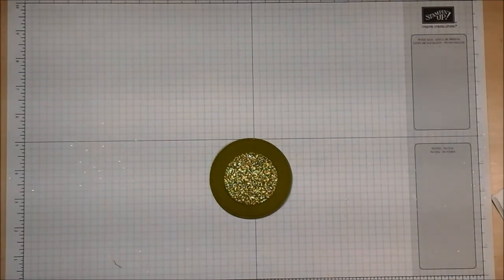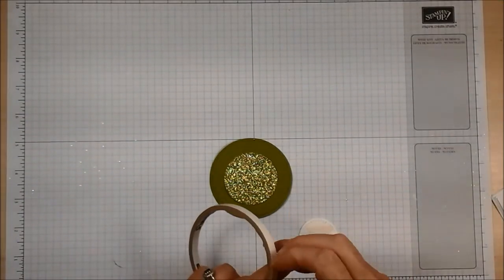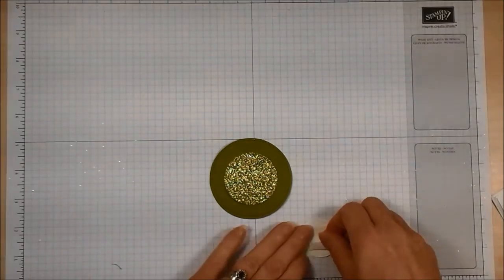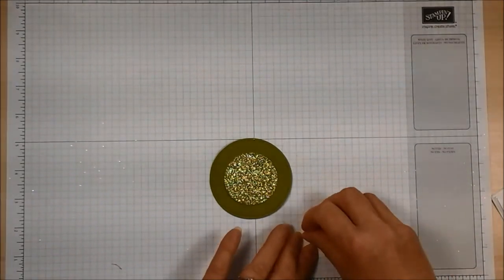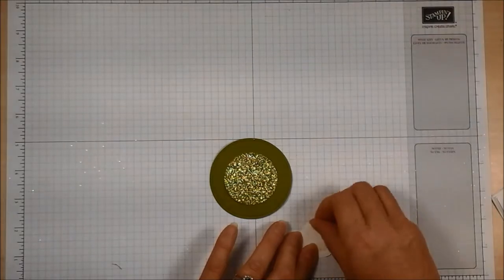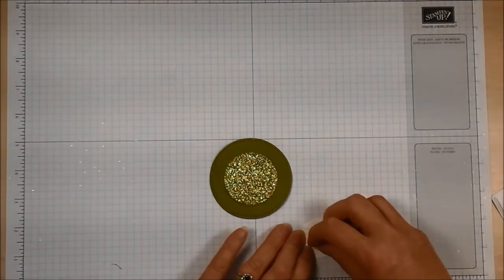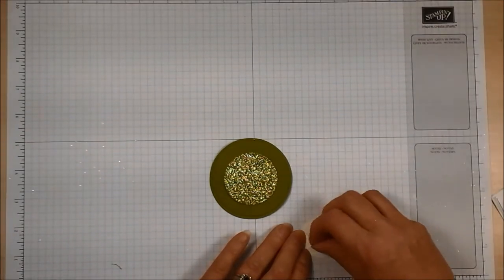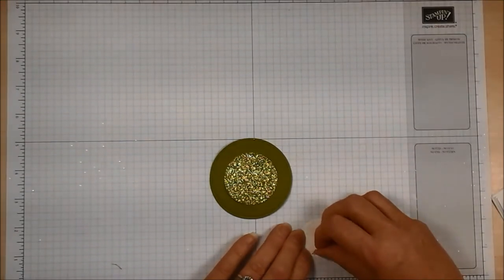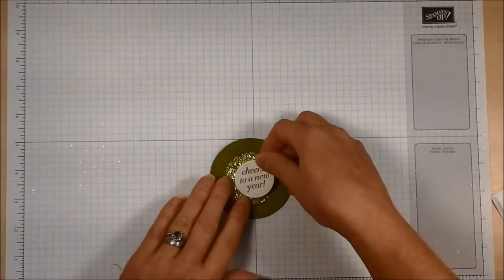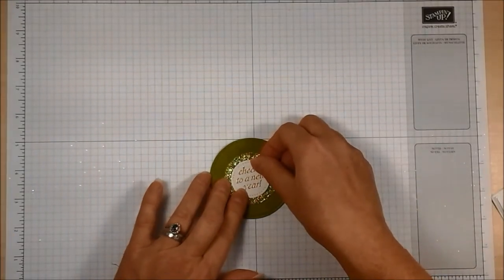Then I'm going to put some tear and tape on the back of my die cut piece of sentiment. There we go. Pull that off. There we go. That's done. We're going to put that in the centre.